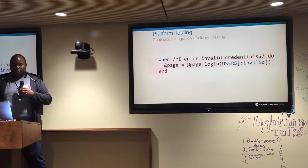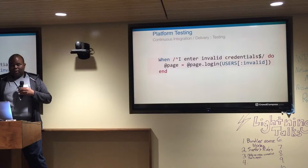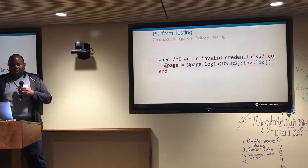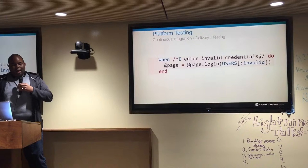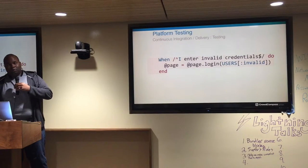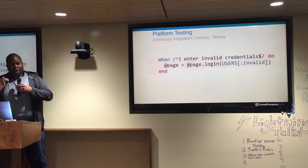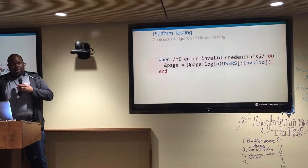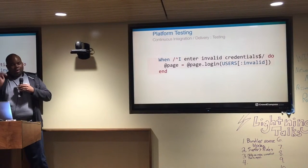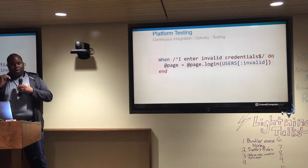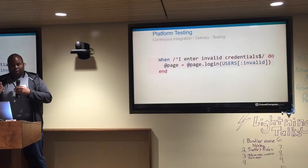When it branches over, we look at the step definition code and see that 'when I entered invalid credentials' we have an '@page.login', which refers to our page file. We organize it in such a way to separate our iOS page files from our Android page files, which I'll get into a little bit later.